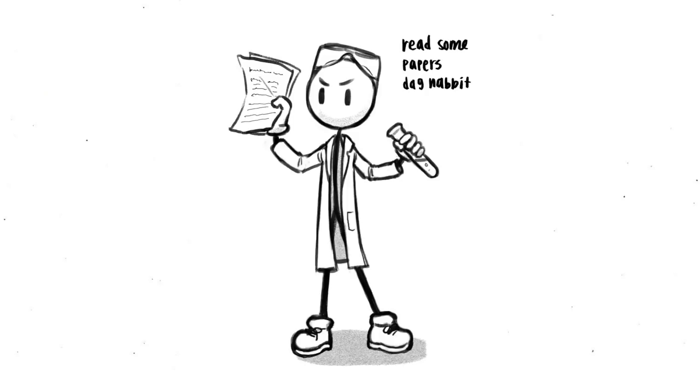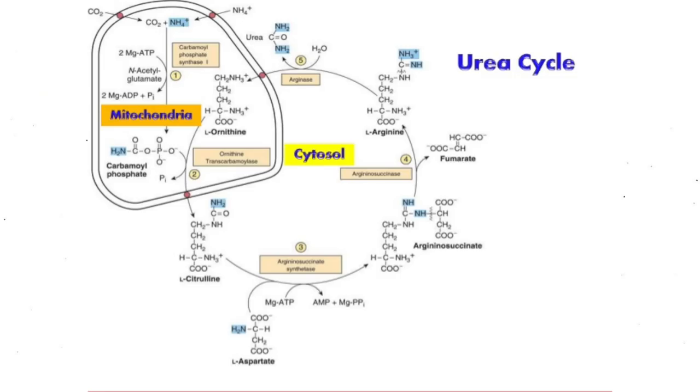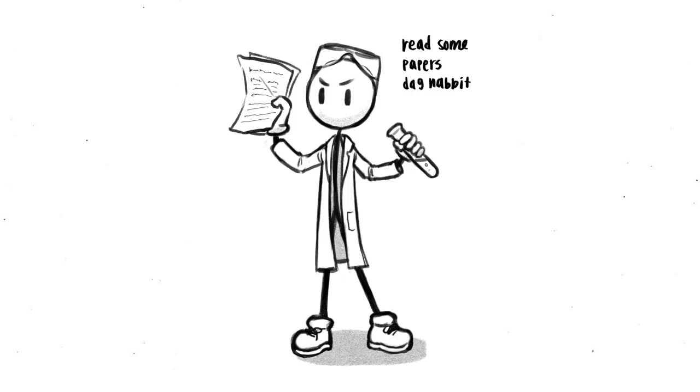How about nitrogen waste? Cells produce it, especially when breaking down amino acids for energy. This nitrogen waste can be harmful, so the body must get rid of it. The urea cycle takes care of that and stores this nitrogen as urea, which is then transported to the kidneys to be filtered out of the blood. So, no, nitrogen is fine too.